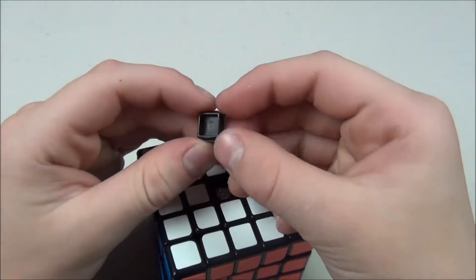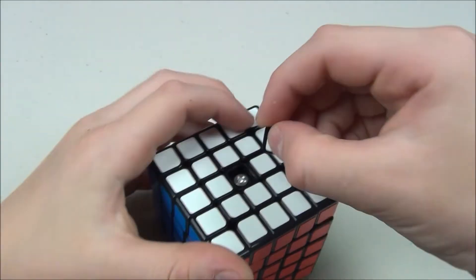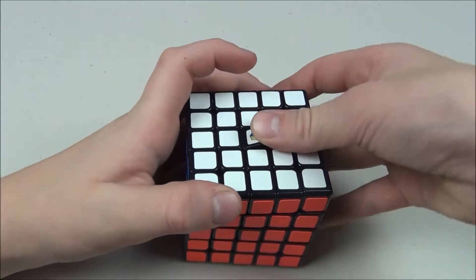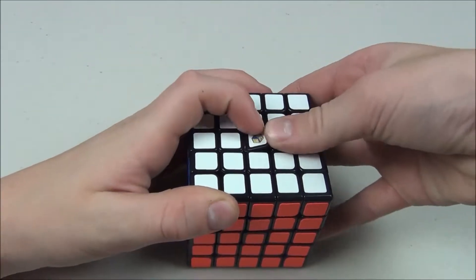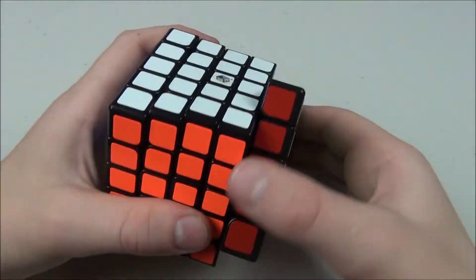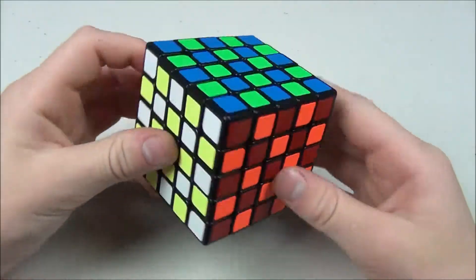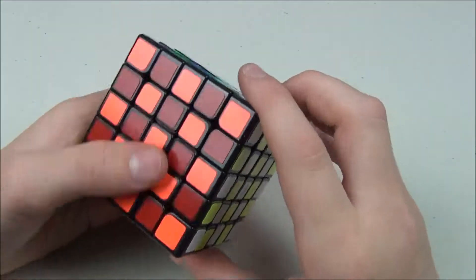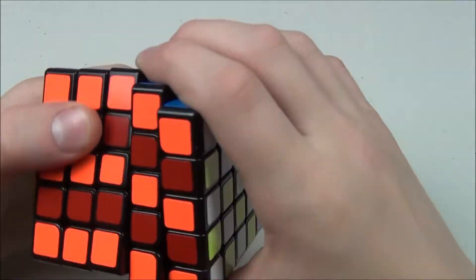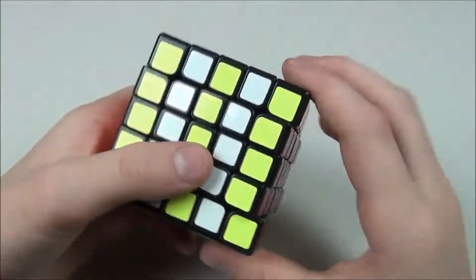Also the center caps, this almost looks like a Zanchi center cap, but the center caps want to pop off a lot too during solving. So I'm going to go ahead and put it in checkerboard and we'll just see how it turns. Alright. So here it is in a checkerboard and turning it, you know, just alone like that without doing any algorithms, it's incredibly smooth and I'm very, very impressed with it and very happy with it.